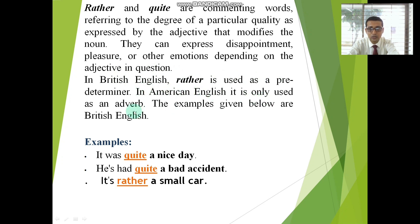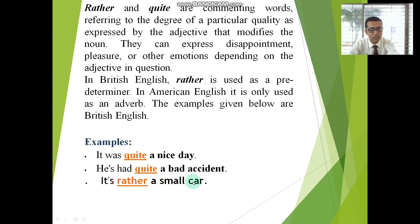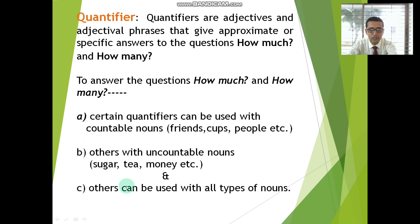In American English, 'rather' is only used as an adverb. The examples given below are British English. Example: 'It was quite a nice day' — 'quite' is functional here as a pre-determiner. 'He has had quite a bad accident' — 'quite' is a pre-determiner here. 'It is rather a small car' — 'rather' is functional here as a pre-determiner.